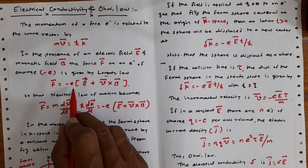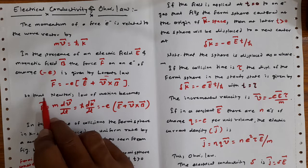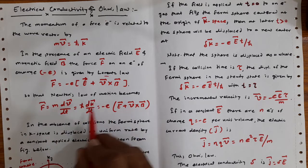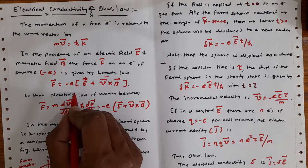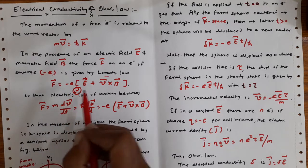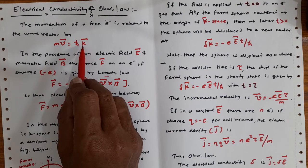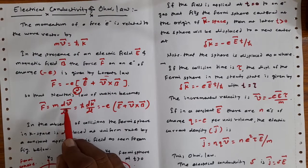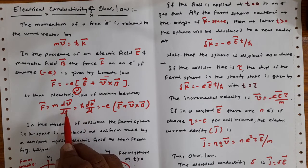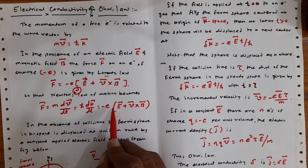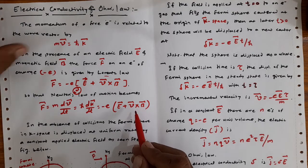Correlating this force with Newton's second law of motion, we get F̄ = m·dv̄/dt. Since mv̄ = ℏk̄, we take the derivative with respect to time and substitute, giving us ℏ·dk̄/dt = −e(Ē + v̄ × B̄). This is the fundamental equation of motion for the electron in the presence of electric and magnetic fields.